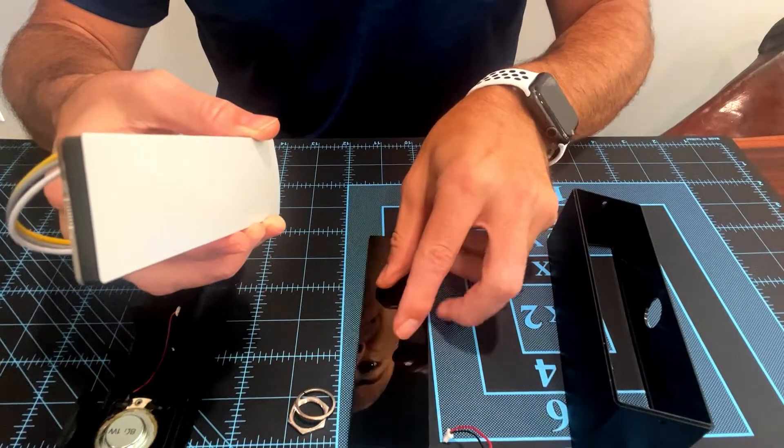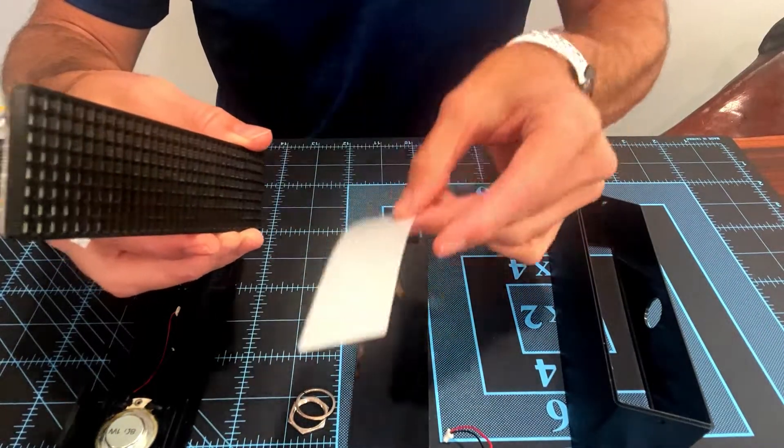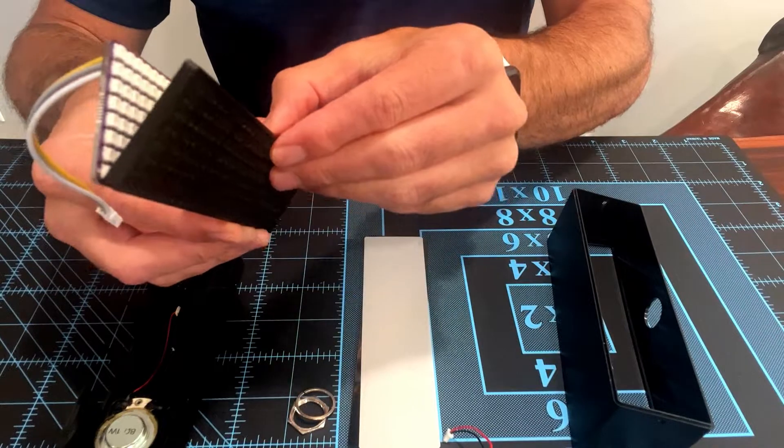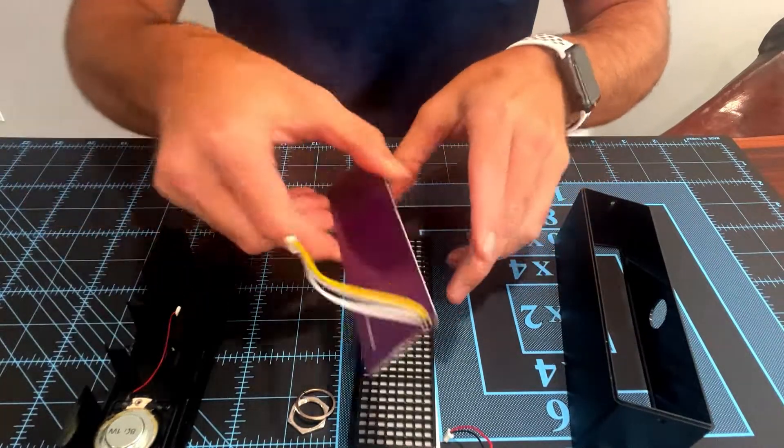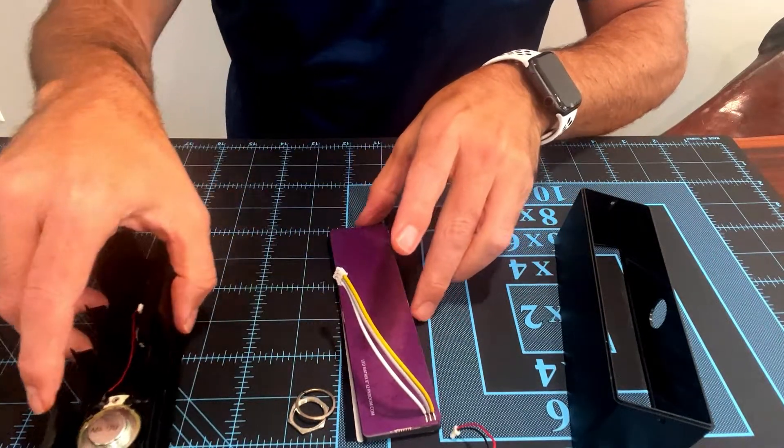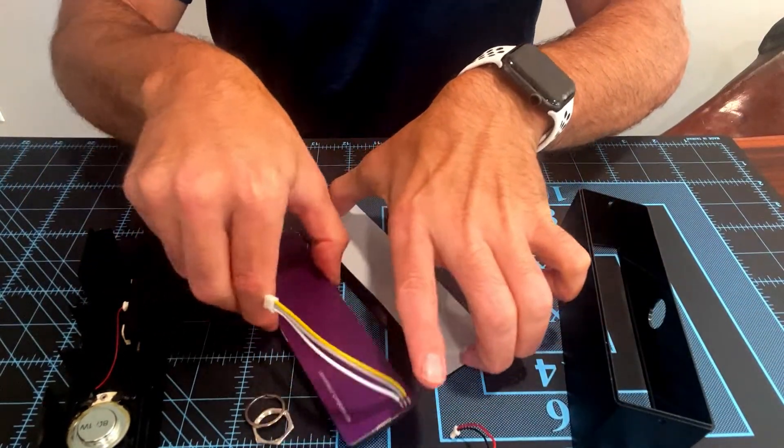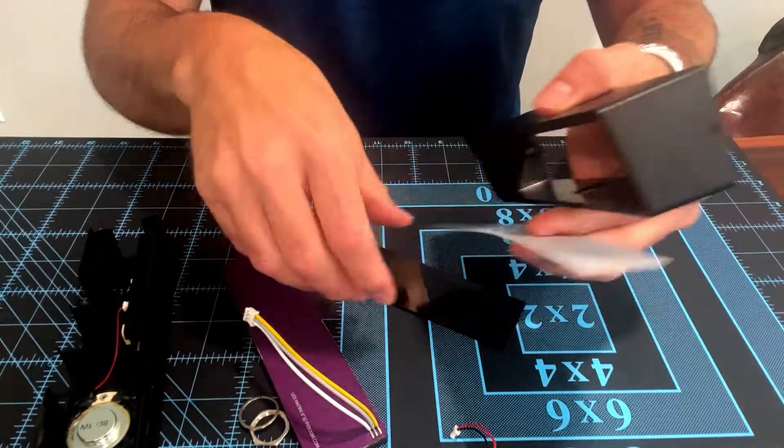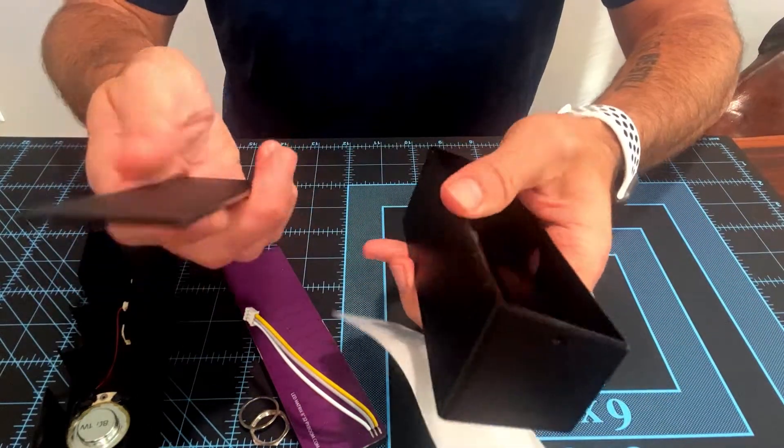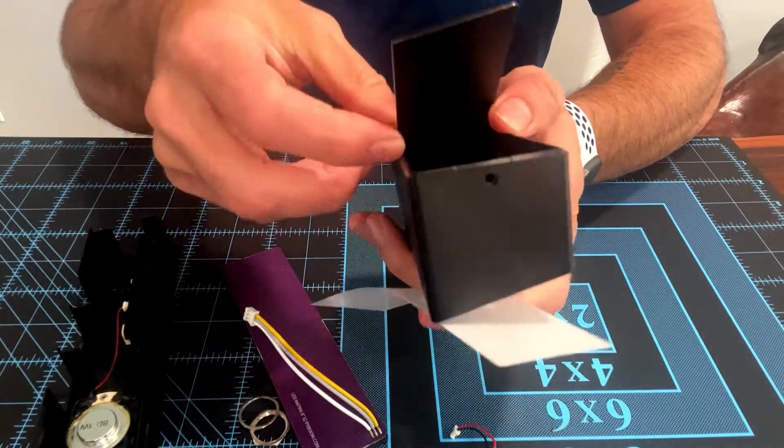Now I will show you how to reassemble these. To start, we will take the acrylic and just drop it into the front, and then set the diffuser panel on it.